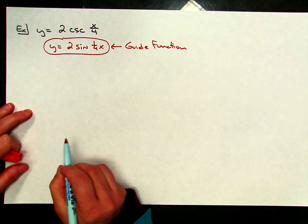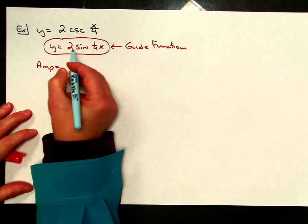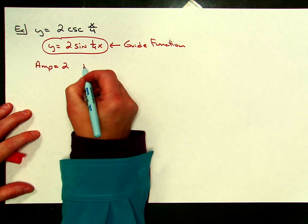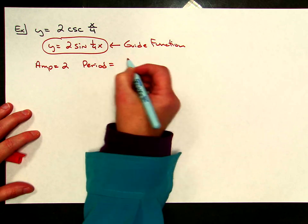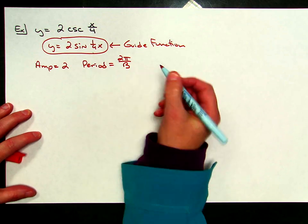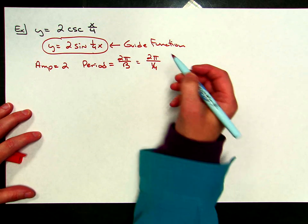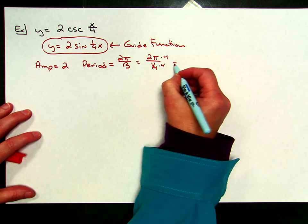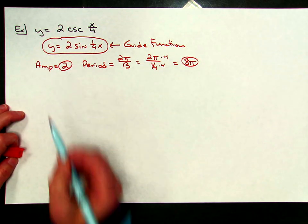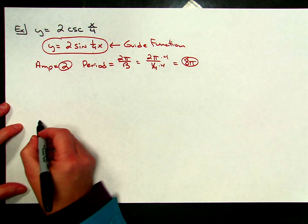Some things you'll need to calculate in order to sketch this: our amplitude would be the absolute value of a, so the absolute value of 2 is 2. Then if I calculated my period, I'd use the formula 2π over b. The b coefficient here is one-fourth, so 2π over one-fourth — multiply through by 4 — and you're going to get 8π for our period.